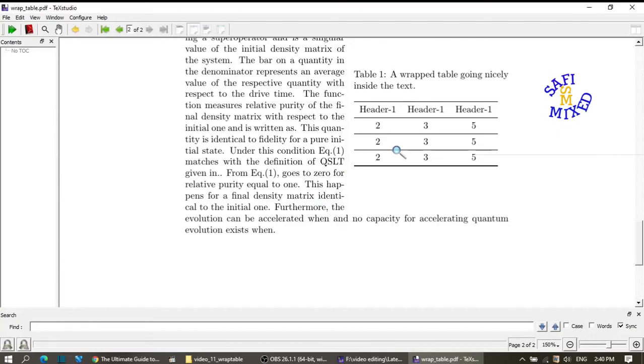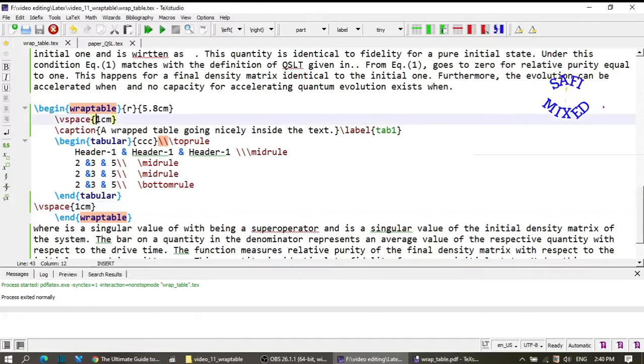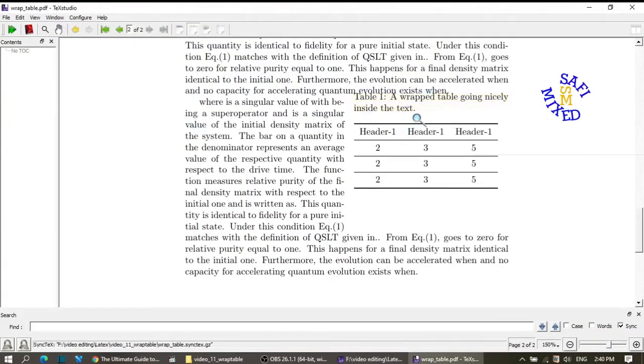And if you want to decrease the space, then you have to put a negative number inside the argument of the vertical space command. And if I run this now, the space has considerably reduced such that the caption on the table is overlapping with the top of the text.